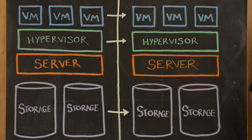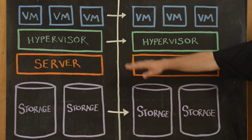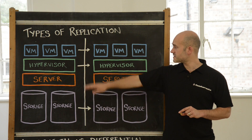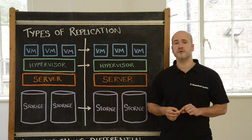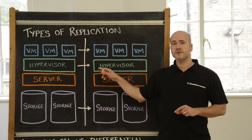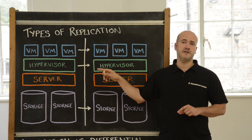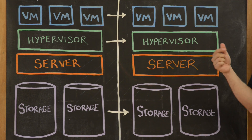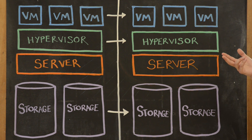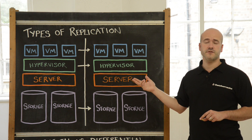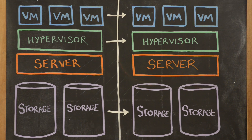As you move further up the stack you get to the hypervisor level replication. At this point it starts to get cheaper and it becomes more cost effective. One thing to bear in mind is that at this level you're likely to have to be running the same hypervisor on your side as a service provider would on their end. But hypervisor level replication is efficient, it can be fast, and it allows you to prioritize groups of VMs according to the priorities assigned to them.